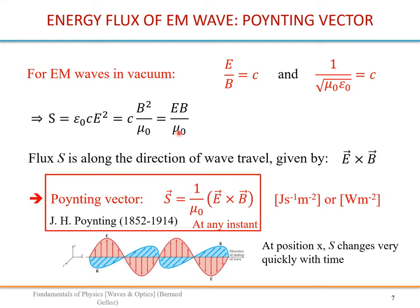The direction of wave travel is given by E cross B. Since S can be expressed as E multiplied by B, it is useful to define a vector quantity giving both the magnitude of the flux and its direction. This is known as the Poynting vector, defined as one over mu-zero times E cross B. This vector gives the magnitude of the energy flux and the direction of energy propagation — the Poynting vector actually points in the direction of the energy flux.